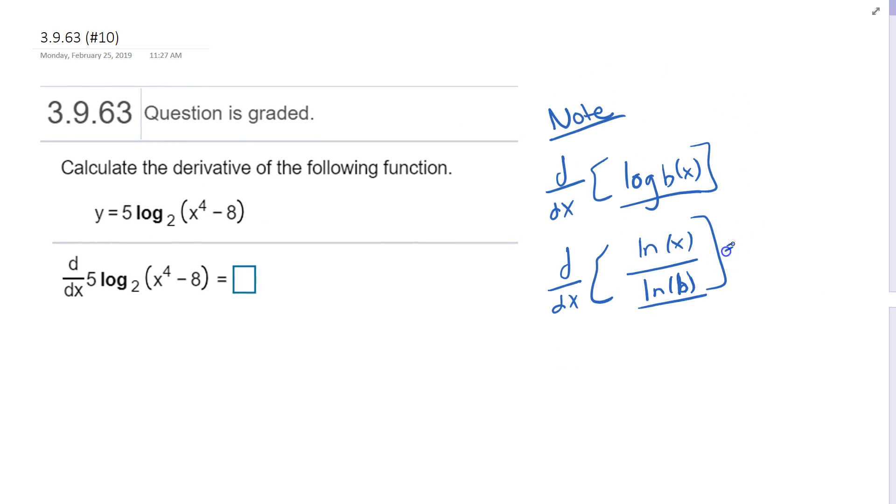So if I want to take the derivative of this, this is a constant so I can pull that out. You get 1 over ln of b times the derivative of ln of x, which is 1 over x.